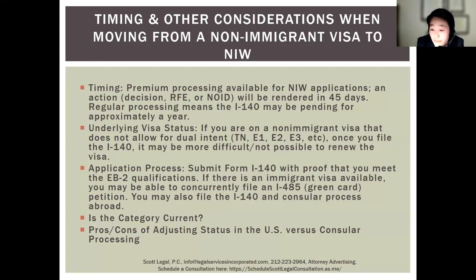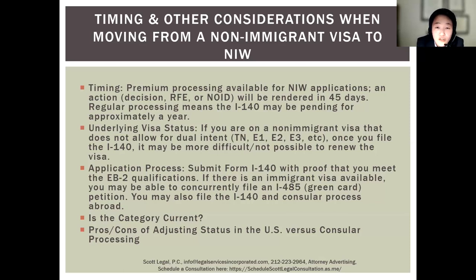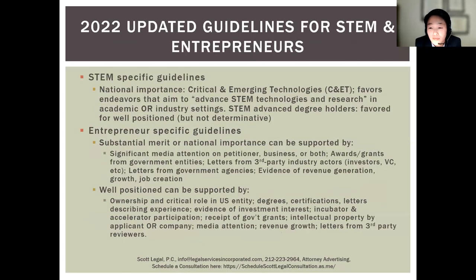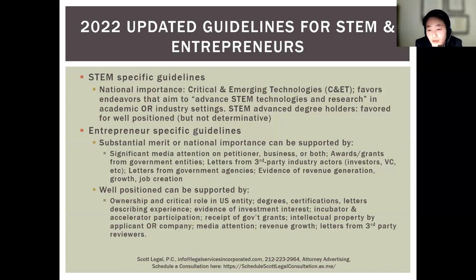By contrast, consular processing allows you to travel back and forth in and out of the U.S. and maintain your underlying non-immigrant status — advantageous if you need to preserve the ability to travel frequently to your home country until your green card process is complete. It is also important to note that family members can apply along with the main applicant, including the spouse and dependent children under 21 years.